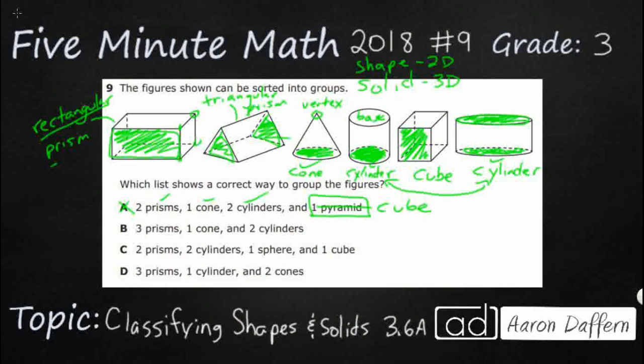Three prisms. I've got one prism. I've got two prisms. I don't know about that third one. I've got one cone. So I'm gonna put a question mark here. Definitely have a cone. And I definitely have two cylinders. There's one and there's two. So that's yes.